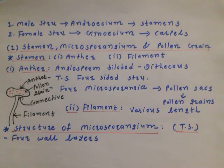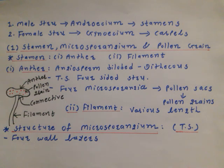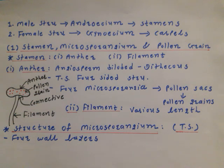In a typical flower structure, there are four whorls observed: calyx, corolla, androecium and gynoecium. As a male structure, androecium is present which possesses stamens. As a female structure, gynoecium is present having carpels. So for the male structure, stamen is the basic unit, and for the female structure, carpel is the basic unit in flowering plants.